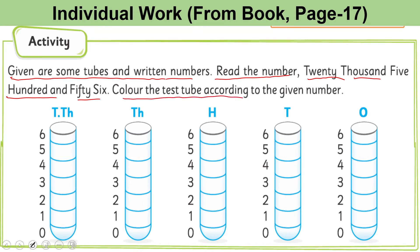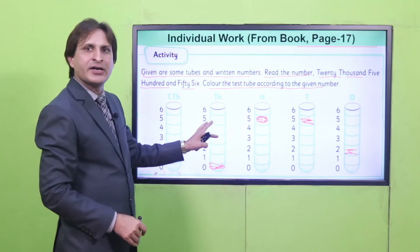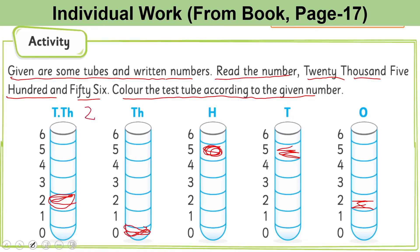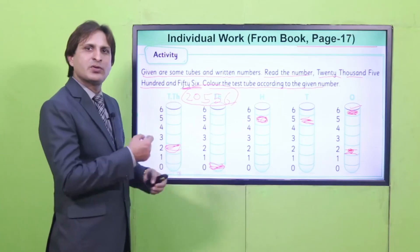You have 20,000 — so color accordingly. Then 500, and then 56: color these test tubes for 20,500 and 56. You get a particular number. You can also write it in standard form: you had 20,000 + 500 + 56, and here you color 6, not 2, so you get 56. This gives you the standard form of the number. Students, solve the examples in your book in the same way.